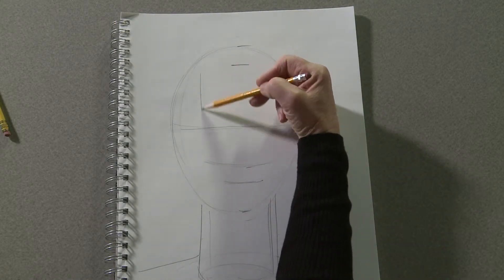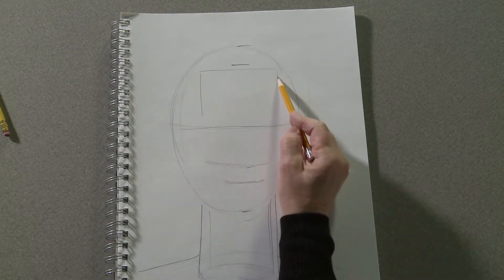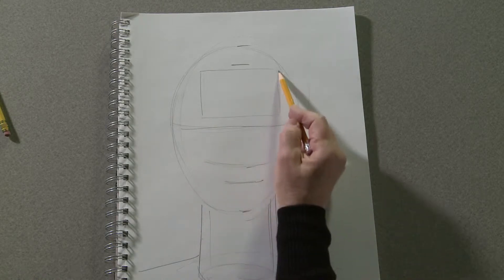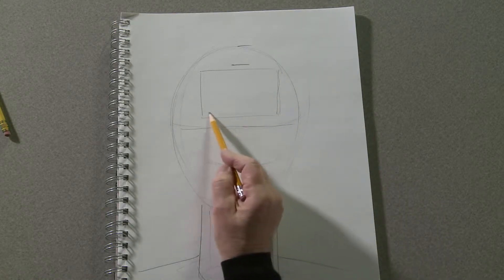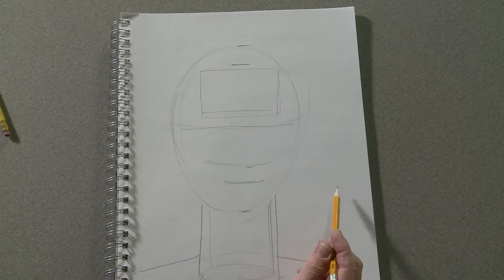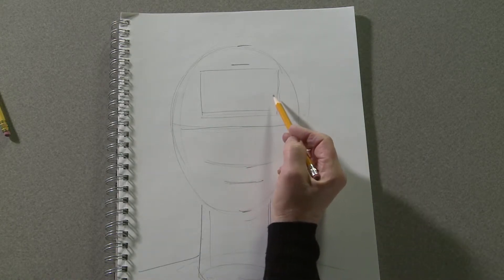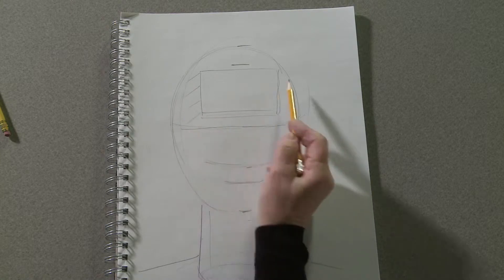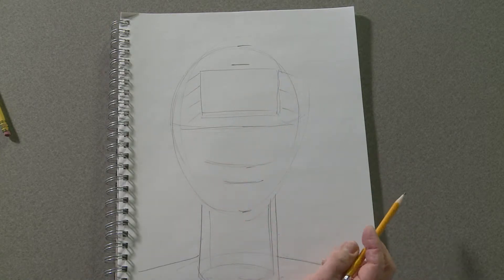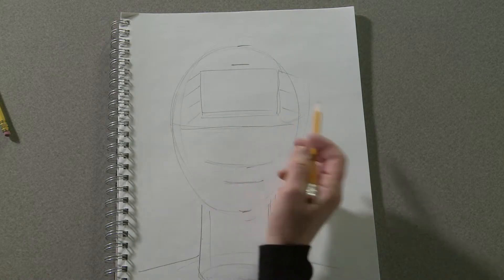Another guideline we'll put in is a long rectangle which will represent the forehead, where the forehead is flat in the front and begins to go back on the sides of your head at the temples. Now we're going to start the eyes.